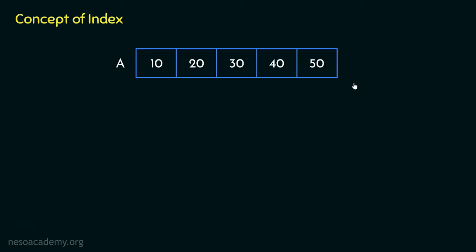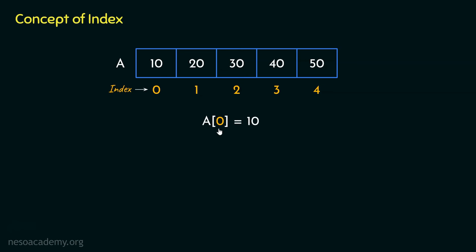In the context of arrays, an index refers to the numerical position of an element within the array. It's basically an integer that starts at 0 for the first element and increases by 1 for each subsequent element. The index allows us to access and reference the elements in the array efficiently. For example, the element 10 within array A can be accessed by going to cell A[0]. Similarly, going to cell A[1], we will be able to access element 20, and so on for the rest of the elements.